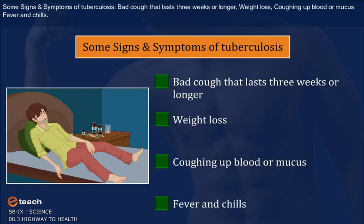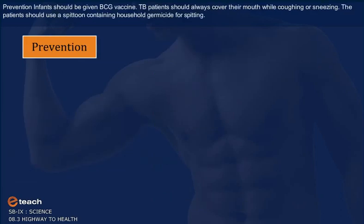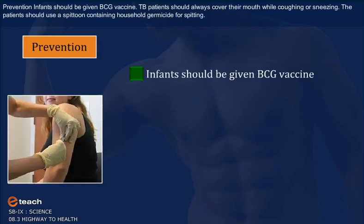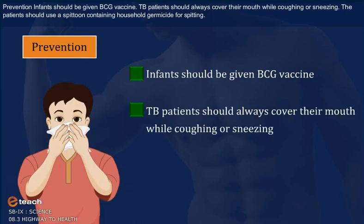Signs and Symptoms of Tuberculosis: Bad cough that lasts 3 weeks or longer, weight loss, coughing up blood or mucus, fever and chills. Prevention: Infants should be given the BCG vaccine.